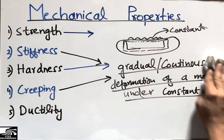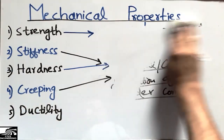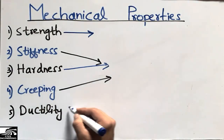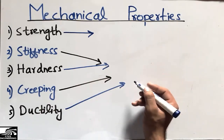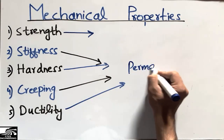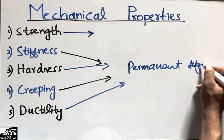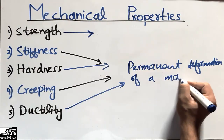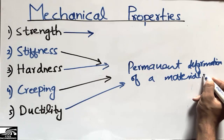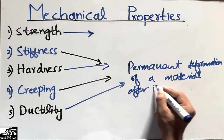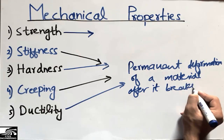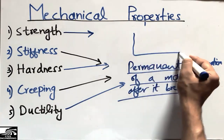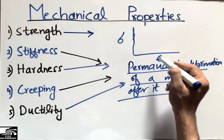The last property of material is ductility. Ductility is the permanent deformation of a material after it breaks. For example, consider the stress-strain graph — here is stress and here is strain.